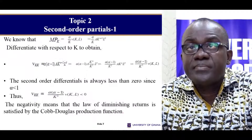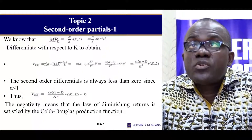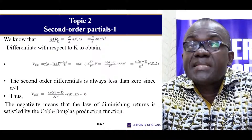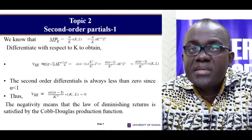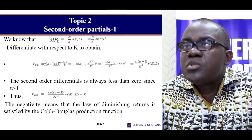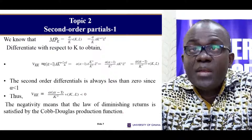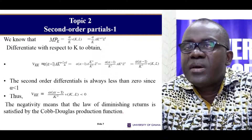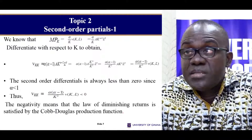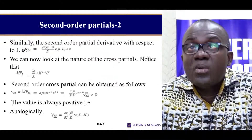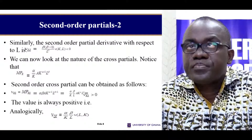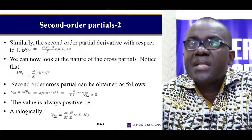Now for the second-order derivatives — we know these are the first-order derivatives with respect to K. We can go further and take the second-order derivative, and when we simplify we get this expression. Again we can substitute the original function in. The second-order derivative gives us a negative value, which means that the law of diminishing returns is satisfied by the Cobb-Douglas function.